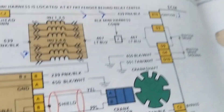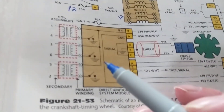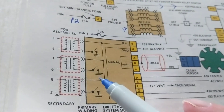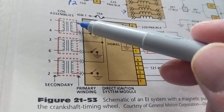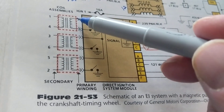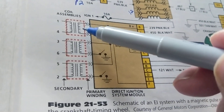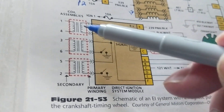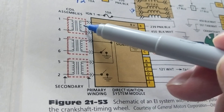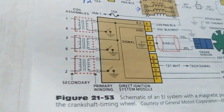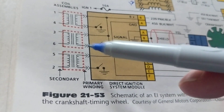Now we come to the ignition coils, which provide the high-voltage spark. I call them transformers — anything with a primary winding and more turns on the secondary is a step-up transformer. They call it an ignition coil. For example, if you have 100 turns on the primary and 10,000 turns on the secondary, the secondary will obviously have much more voltage.